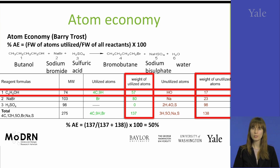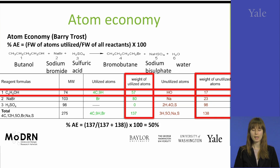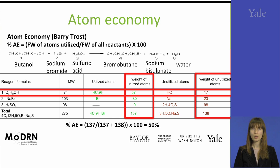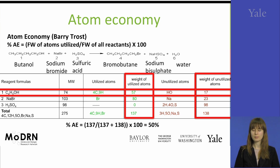For this particular example, four carbons and nine hydrogens have been utilized. Similarly, we look at sodium bromide and how many atoms from sodium bromide have been incorporated into bromobutane. In this particular situation, only bromide has been incorporated into bromobutane. For the four carbons and nine hydrogens, the molecular weight of all these atoms equals 57. Bromine is 80.